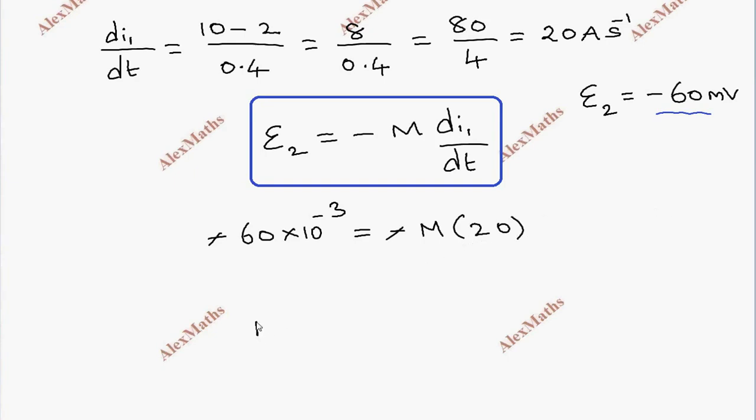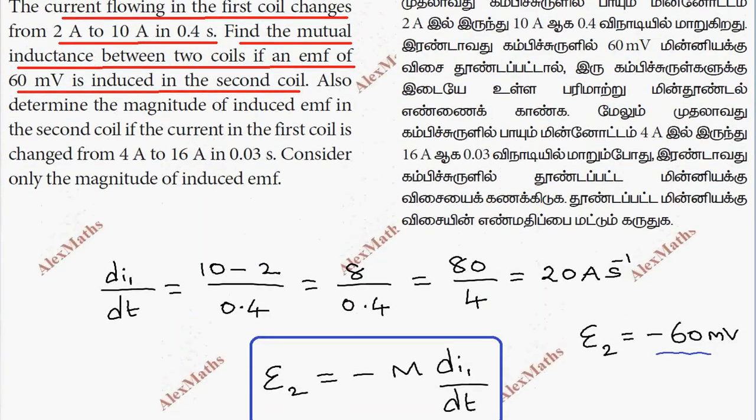Now, if we solve for M, 60 into 10 power minus 3 divided by 20. This cuts to 3. Then, total mutual inductance is 3 into 10 power minus 3, and we have a unit of Henry. So, first part is complete.